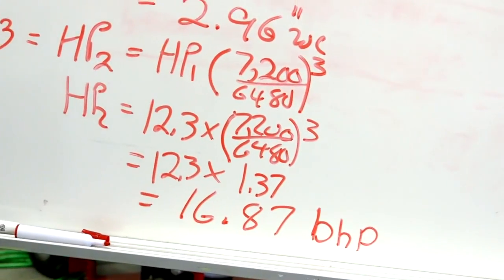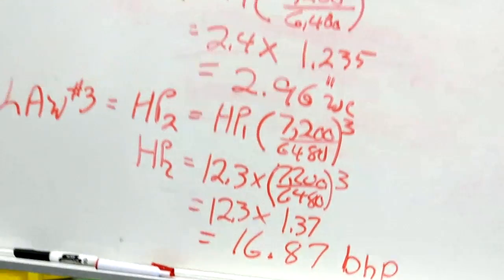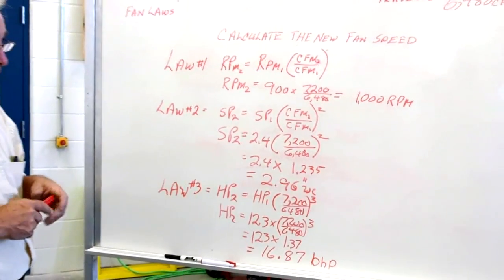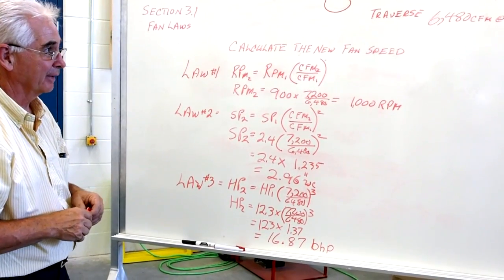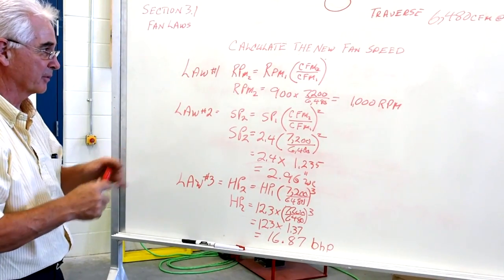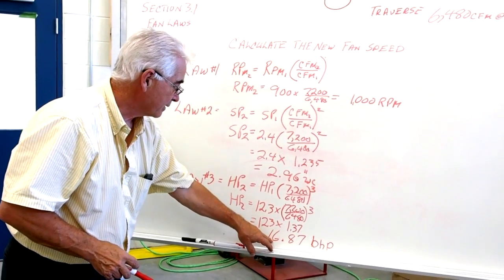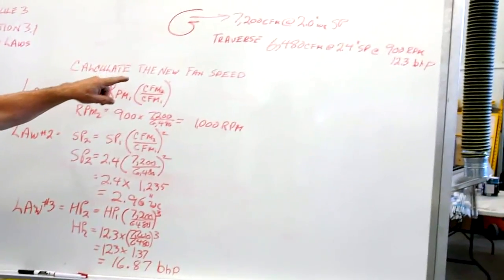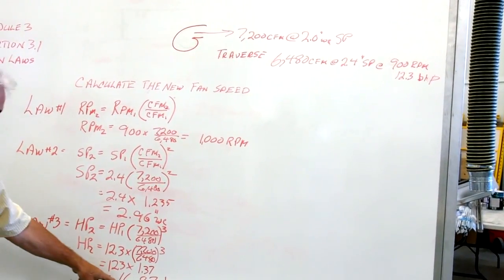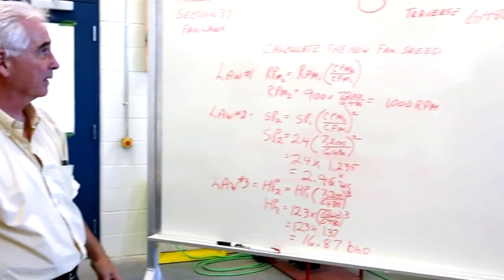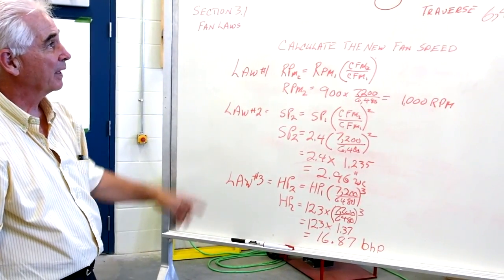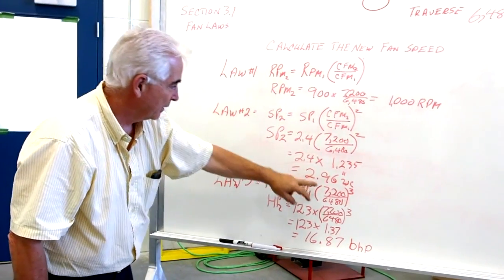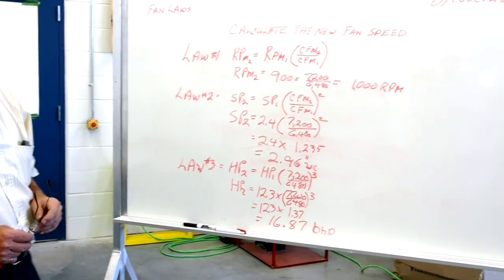Don't get confused between horsepower and brake horsepower — they're interchangeable here. Brake horsepower is what you put into the fan; horsepower is what comes out of the motor. So we had to increase from 12.3 up to 16.87 horsepower to drive 7,200 CFM through the system at 2.96 inches of water column.